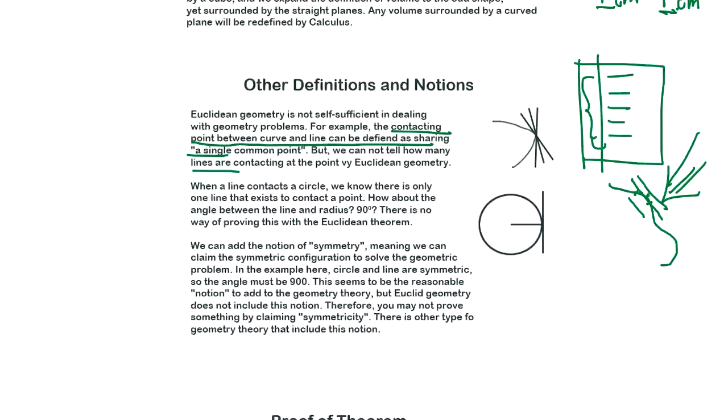For example, what do you mean by contacting, line contacting one curve? It could be contacting two point or single point or not contacting at all. So we have to define what the contacting means between curve and line. And when a line contacting a circle, we know there is only one line that exists to contact a point. Is that true? How about can we have another line contacting at the same point? But that will be solved by saying when the line is contacting the circle, the angle is 90 degree.